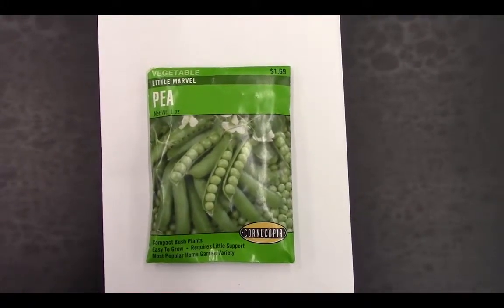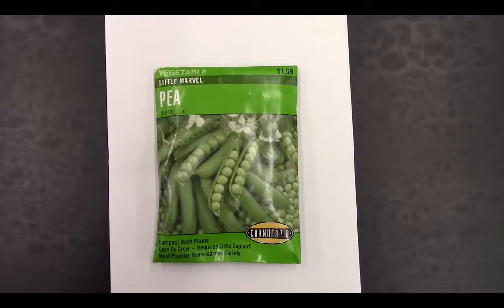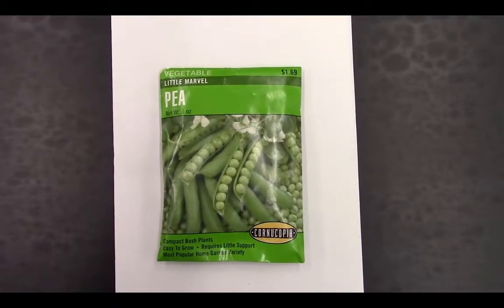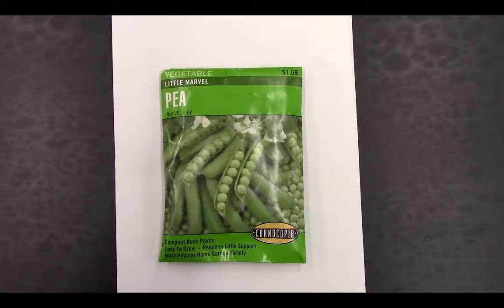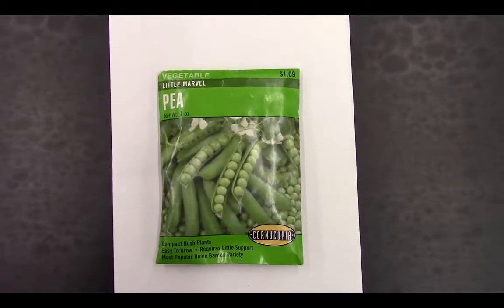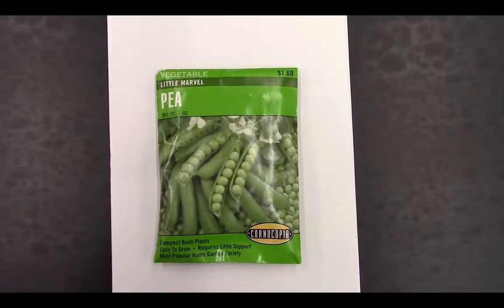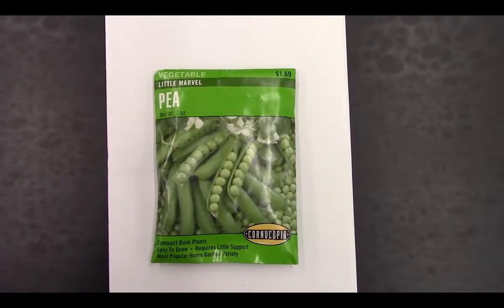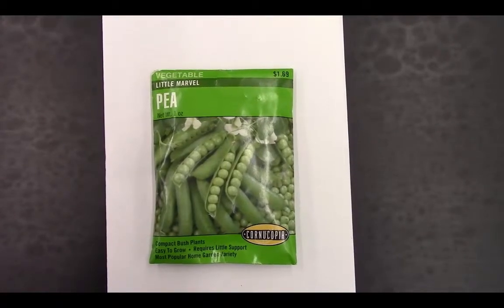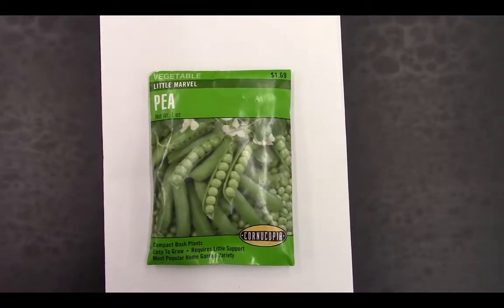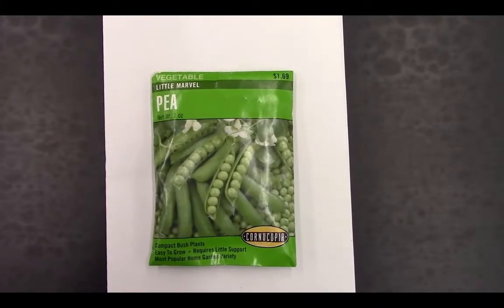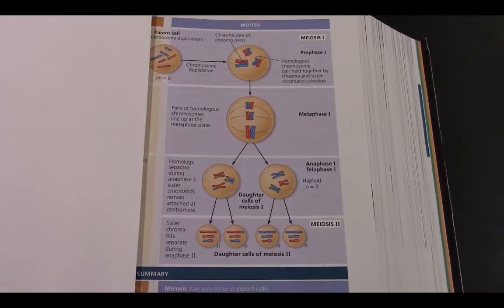A pea plant parent had many flowers, and each flower produced egg and sperm cells. When those eggs were fertilized, it resulted in the peas. The peas contain the embryonic plant, so if you buy a packet of pea seeds to plant in your garden, you're really buying a whole packet of embryos contained within the seed, ready to grow into new individual pea plants.